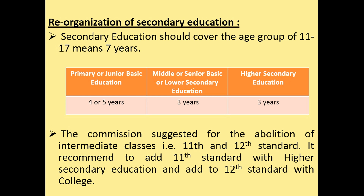Secondary education can be classified into three major parts. Primary or junior basic education covers four to five years, meaning Class 1 to Class 5. Middle or senior basic or lower secondary education covers three years, meaning Class 6 to 8. Higher secondary education covers three years, meaning Class 9 to 11.